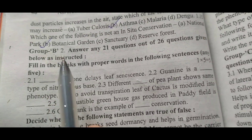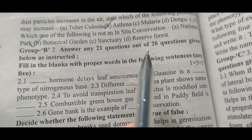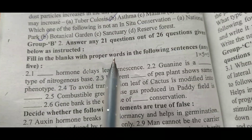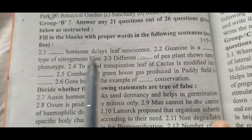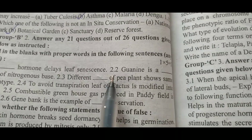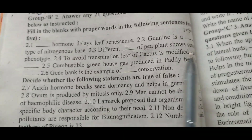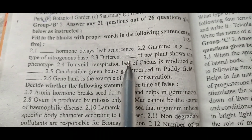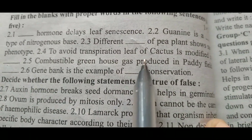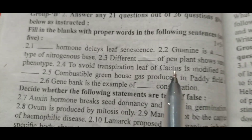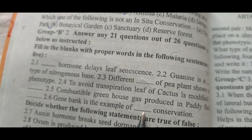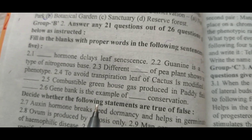Next, Group B. Question 2: Answer any 21 questions out of 26 questions given below as instructed. Fill in the blanks with proper words in the following sentences. 2.1: Right answer — cytokinin hormone. 2.2: Right answer — Purine. 2.3: Right answer — genotype. 2.4: To avoid transpiration, leaf of cactus is modified into thorn. 2.5: Right answer — methane. 2.6: Right answer — XC2.